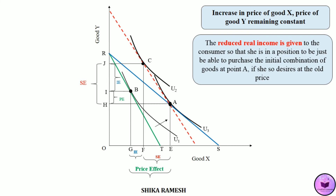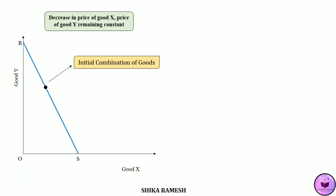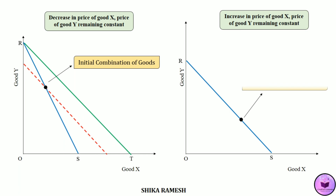In short, the cost difference method adjusts the real income of the consumer when there is a change in the price of one good, with the price of the other good remaining the same, so that the consumer is able to purchase the initial combination of goods at the initial price if desired. If the price of good X decreases with the price of good Y remaining the same, the consumer's real income increases, so this increased real income is reduced to purchase the initial combination. Similarly, when the price of good X increases, the consumer's real income decreases, so this decreased real income is given back to the consumer to purchase the initial combination. This is Slutsky's cost difference method.